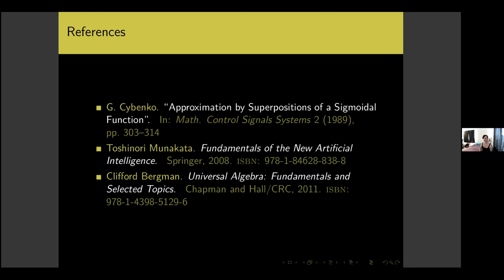That is the hardest of the three cases; the others require less effort. That is everything I wanted to say. Here are some references: Cybenko's original 1989 paper; Munakata's 'Fundamentals of the New Artificial Intelligence' for basics on neural nets; and essentially all of what I described about Mirsky's theorem follows the presentation in Bergman's universal algebra text. Thank you all so much for being here and listening to this talk.